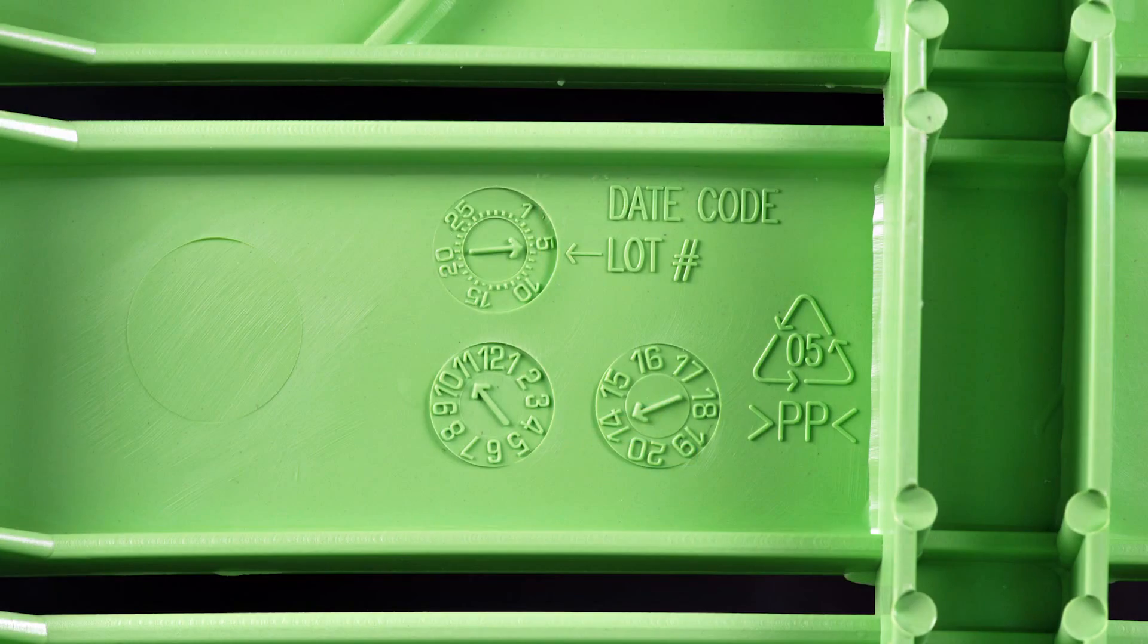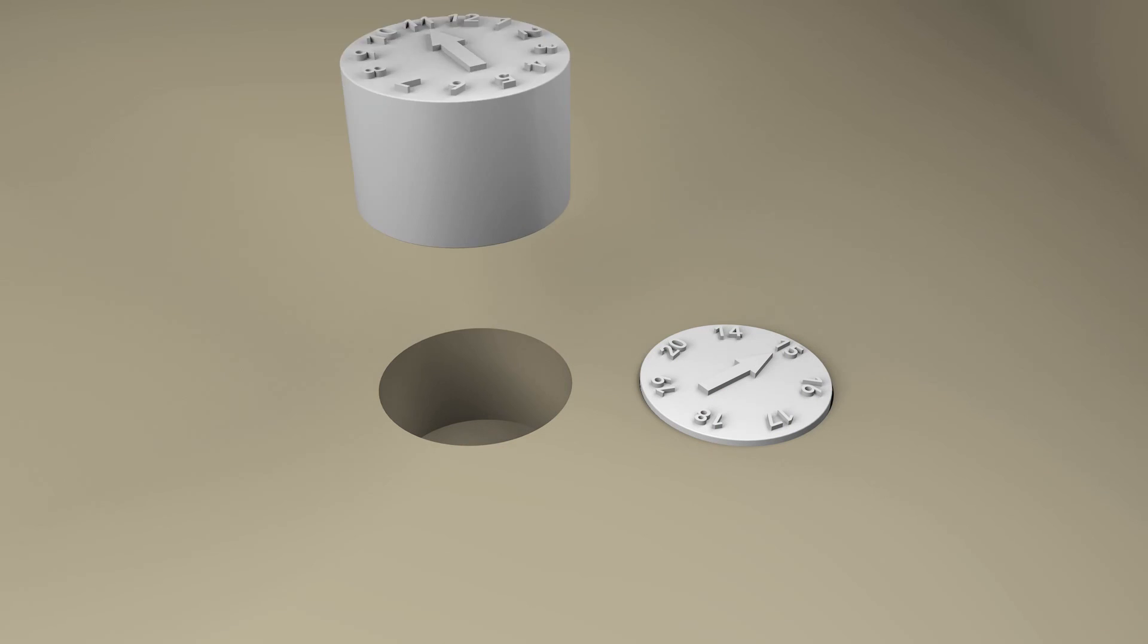Look around you and see how many injection molded objects you can find. Likely the device you're watching this on has injection molded parts. You should be able to find ejector pin witness marks and parting lines. But you may find something like this. It's a date wheel that shows the month and year the item was made. These are created by removable inserts and can be changed out for each run of the mold. They're very useful for tracking down defects.